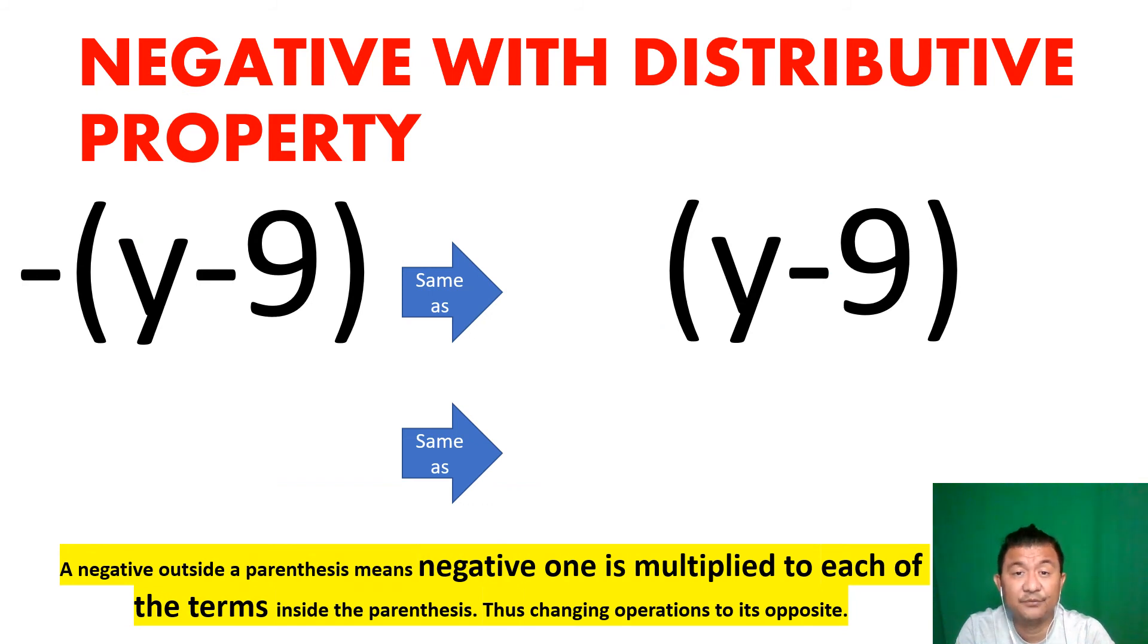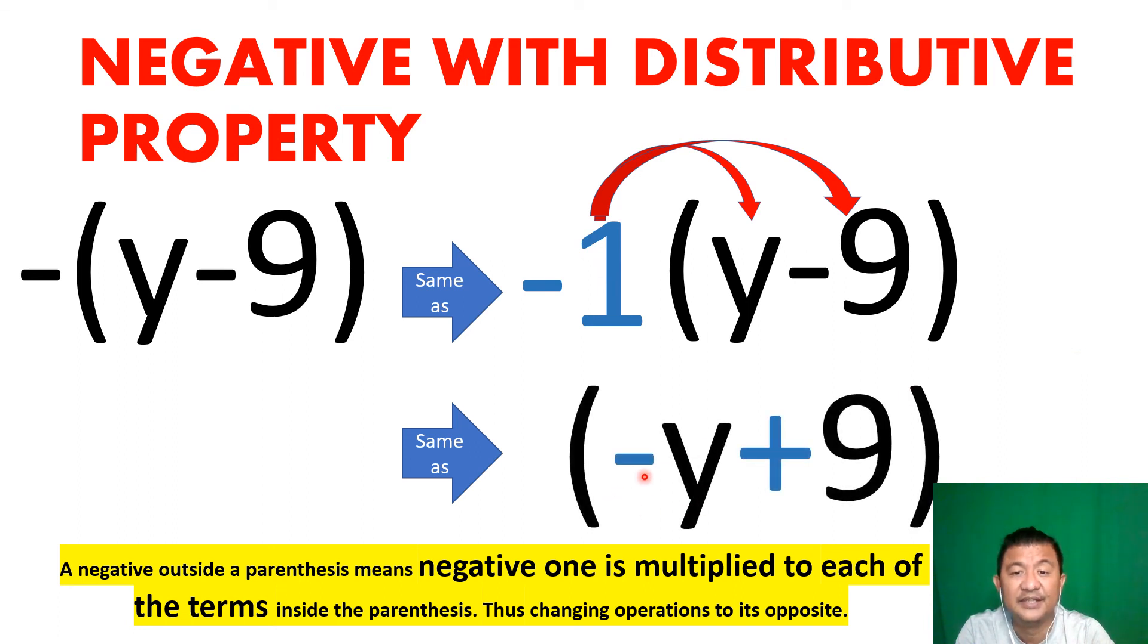A negative with distributive property. Check this out: this negative sign outside the parenthesis, your teacher always warns you about this. That negative actually means there's a hidden negative one outside. Once you got that negative one, you can use your distributive property: negative one times y and negative one times negative nine. Your result will be negative y plus nine. In short, because of that negative, the inner terms become the opposite because of this hidden negative one.